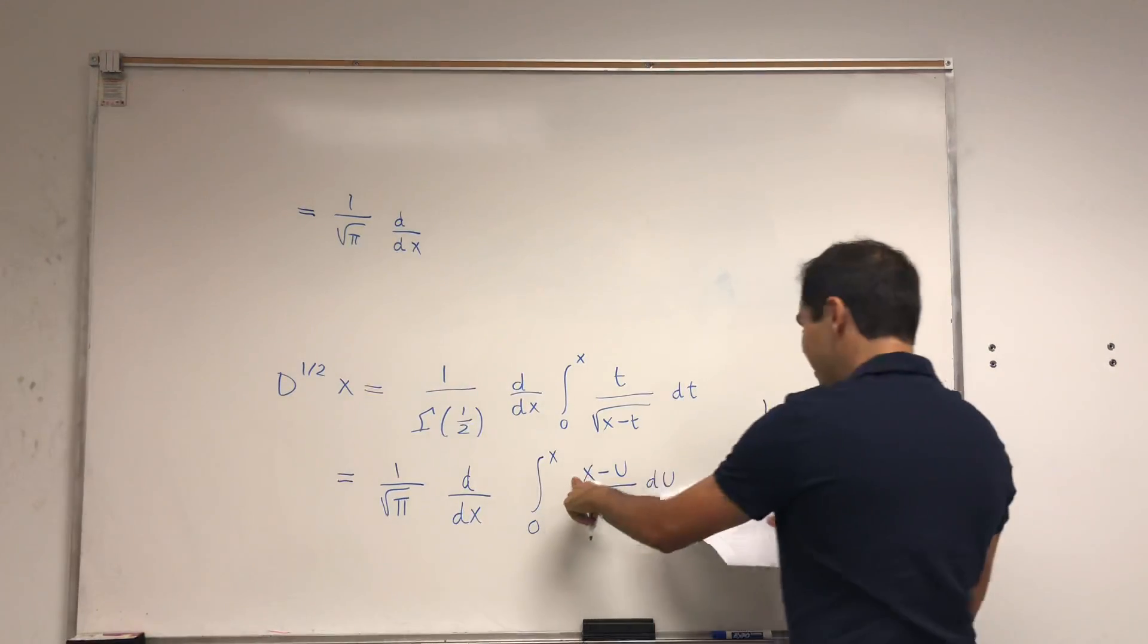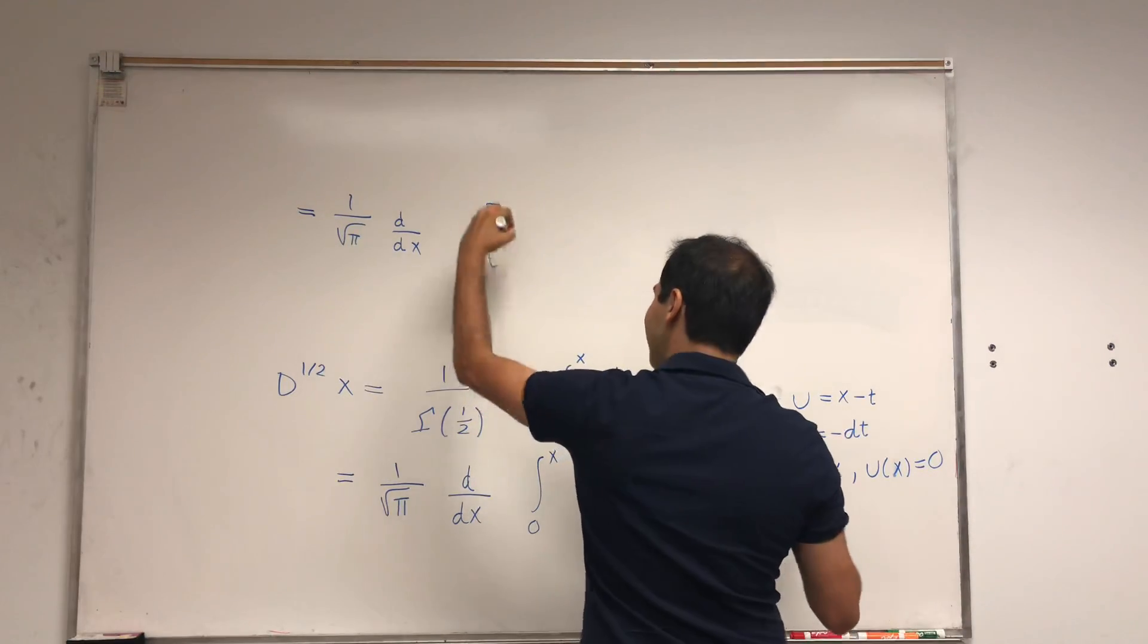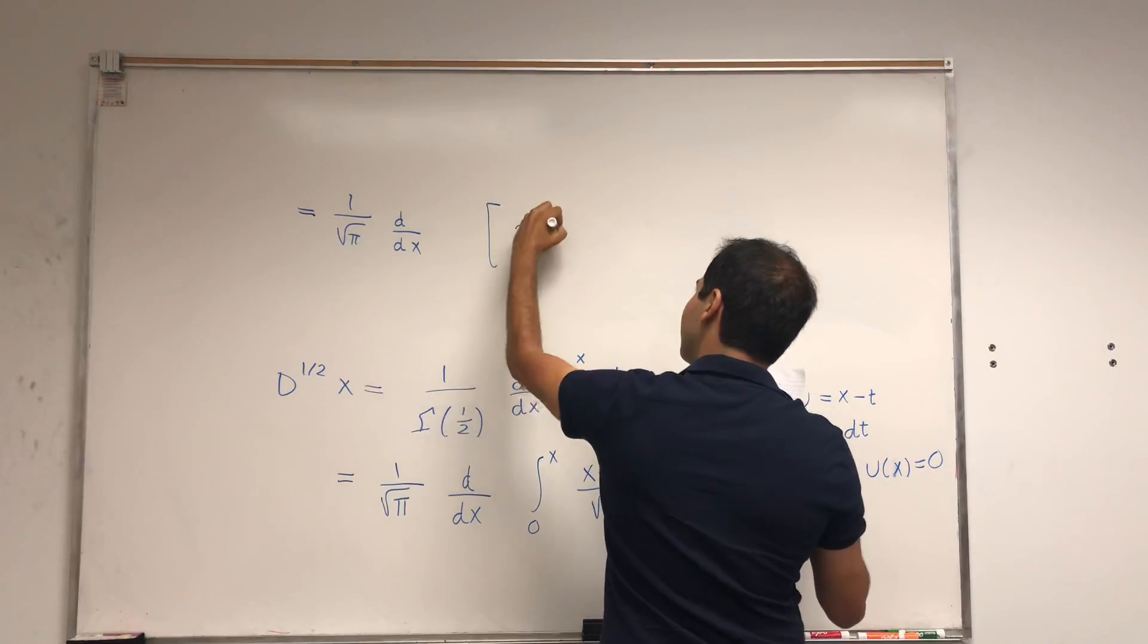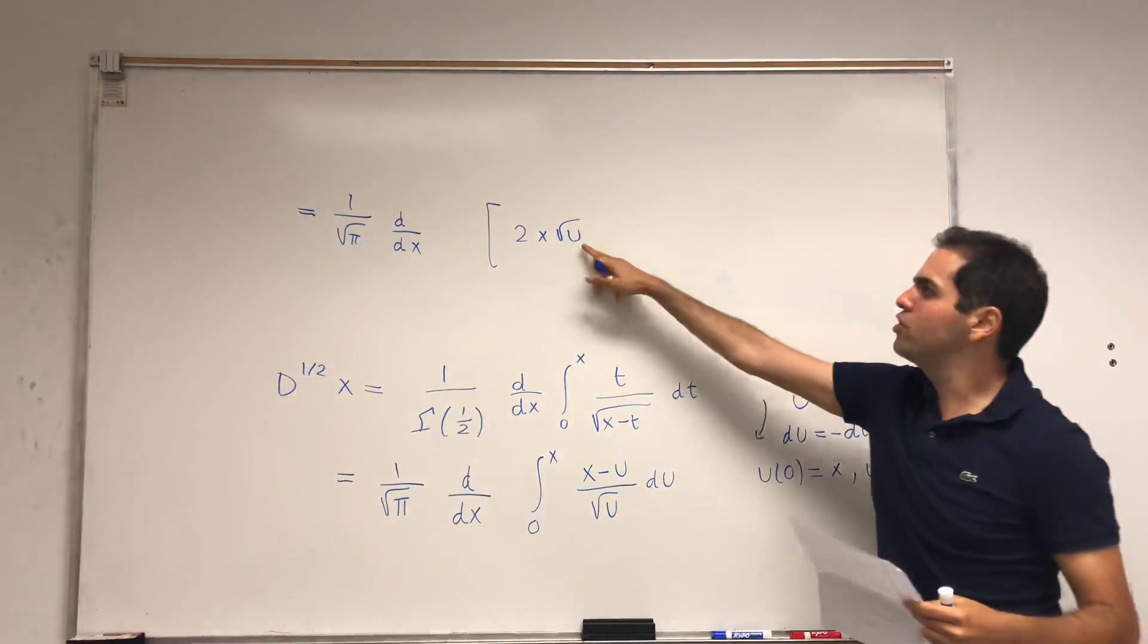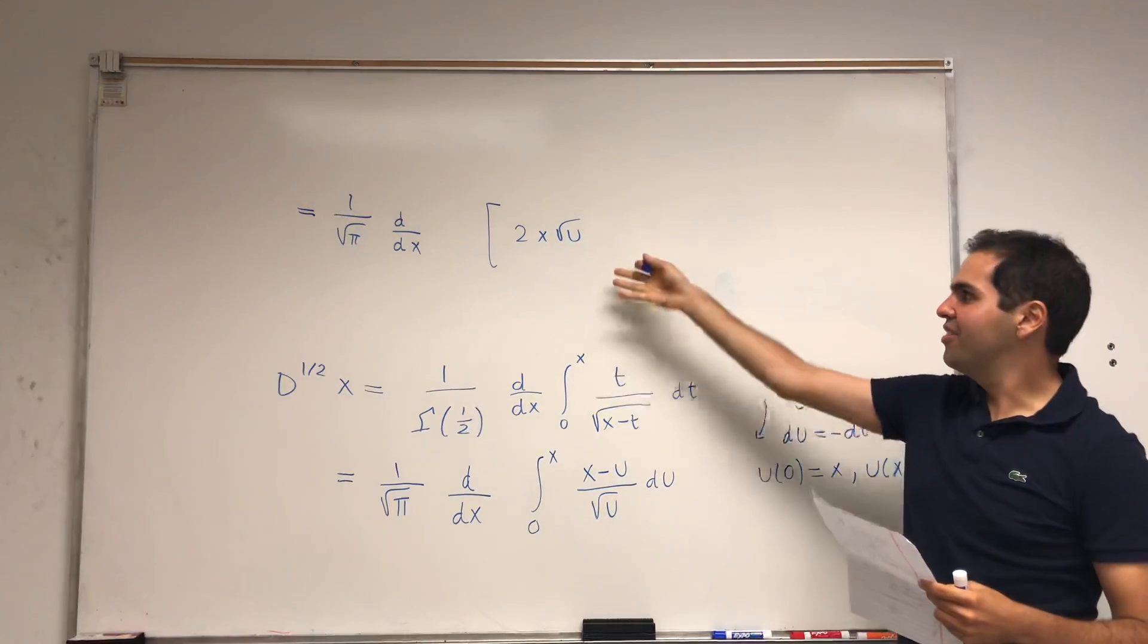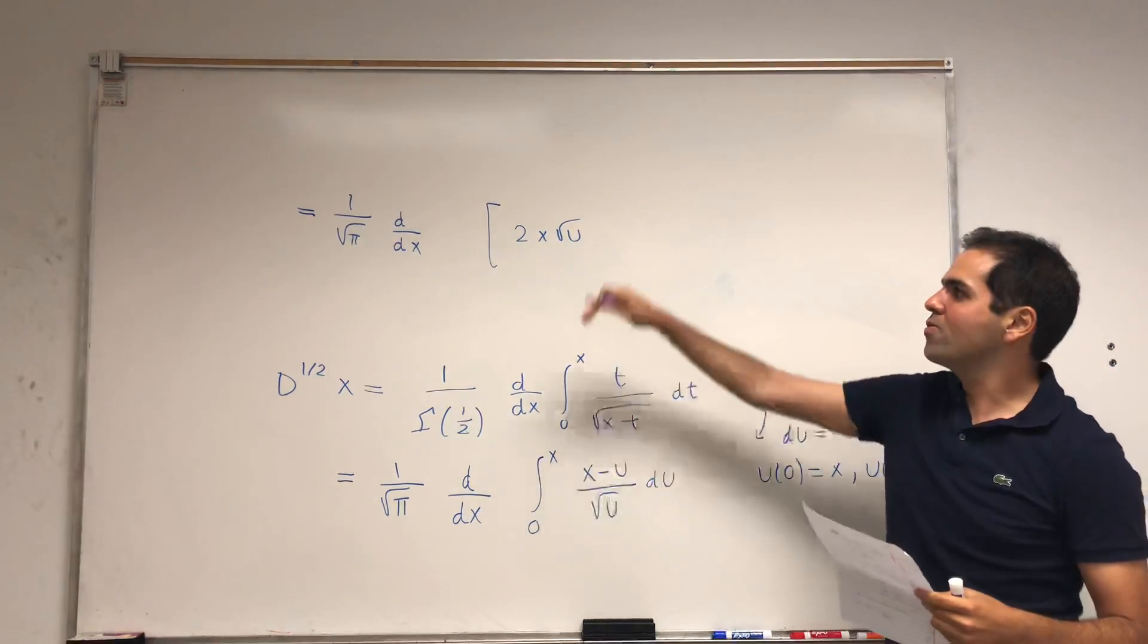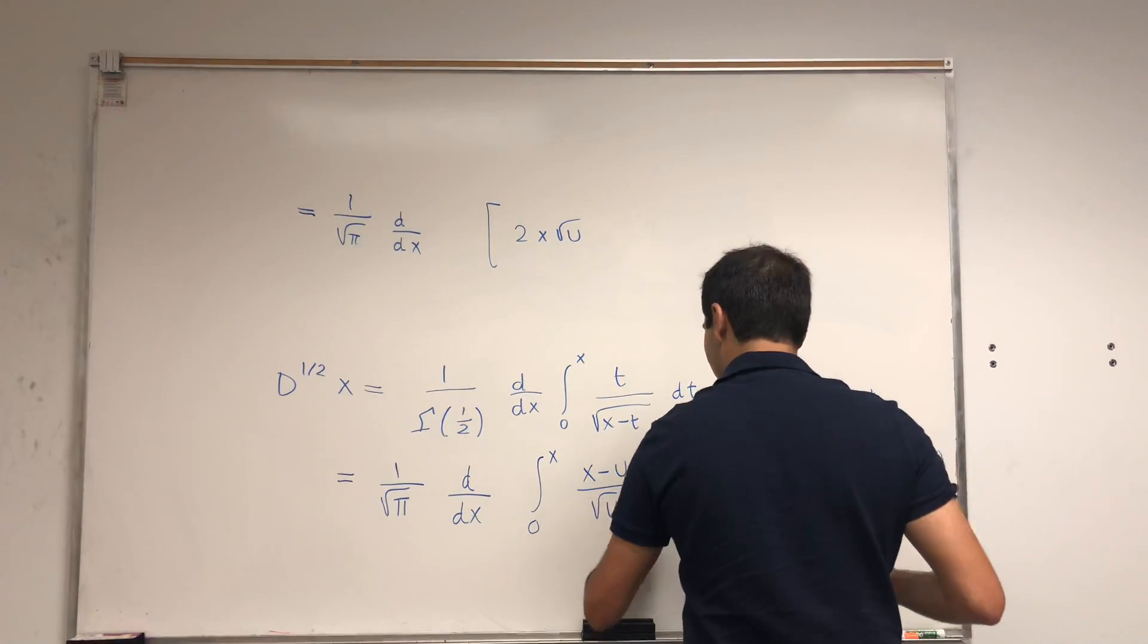So integral of x over square root of u, an antiderivative just becomes 2x square root of u, because the derivative of square root of u is one over two square root of u. And to remedy this one over two, you just multiply it by two.